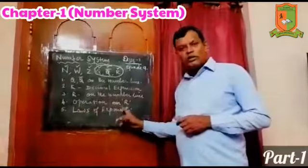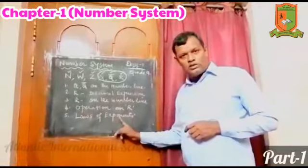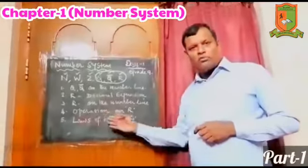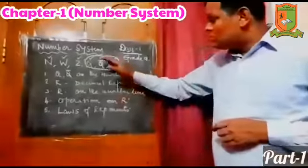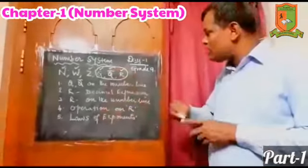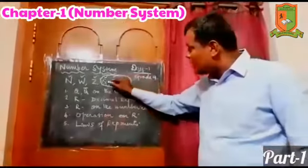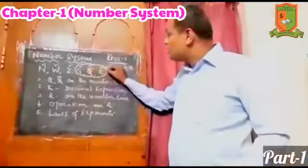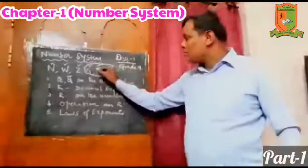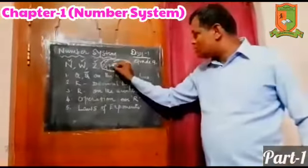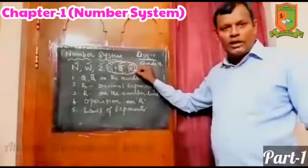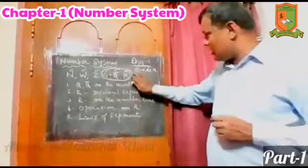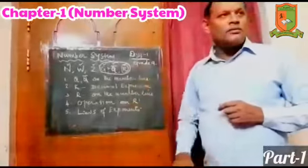Laws of exponents — in eighth standard you have learned about exponents, and here I will repeat the same. So this is what we are going to do. Children, please concentrate. If you learn rational and irrational, you are dealing with real numbers, because the combination of these two is called real numbers. In tenth standard the first chapter is real numbers.